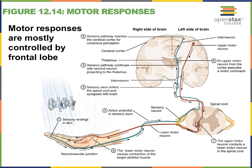Most of your motor responses are controlled by your frontal lobe. The primary motor cortex sits anterior to the central sulcus, meaning we're in the frontal lobe. Sensory information travels up the spinal cord into the brain to the postcentral area, and then neurons leave the primary motor cortex, descend the spinal cord, and go back to your hand — for example, so you can pull it back from hot water.